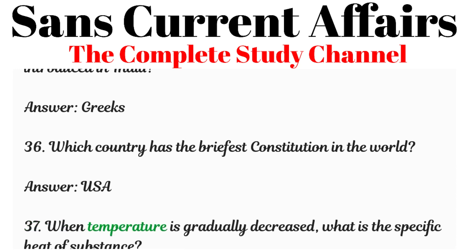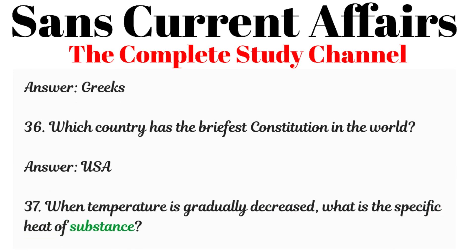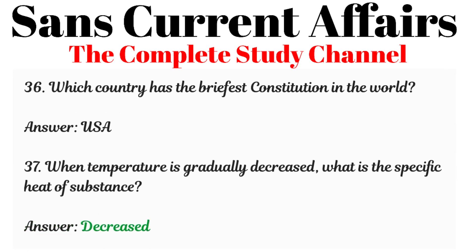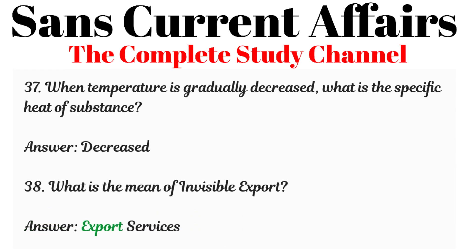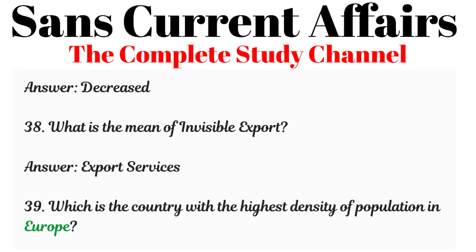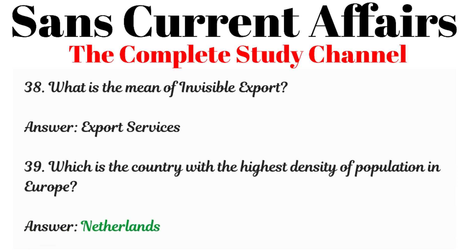Question 37: When temperature is gradually decreased, what happens to the specific heat of a substance? Answered: It decreases. Question 38: What is the role of invisible exports? Answered: Export of services. Question 39: Which country has the highest density of population in Europe? Answered: Netherlands.